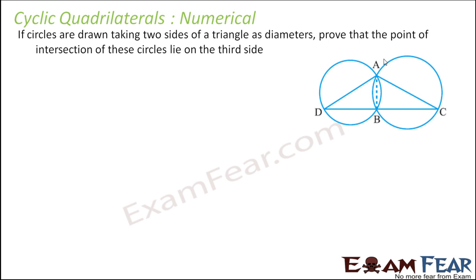Circles are drawn taking two sides of a triangle as diameters. Prove that the point of intersection of these circles lies on the third side. We have to prove that this line is a straight line, and it is given that these two are diameters. Since AB and AC are diameters, angle ADB is 90 degrees and angle ADC is 90 degrees. Adding these two gives 180 degrees — a straight line. So the point lies on the third side.